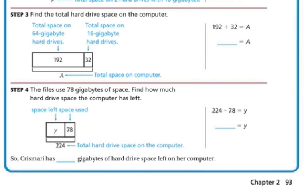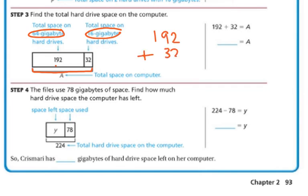Finally, let's find the total hard drive space on the computer. I've got 192 from the 64-gigabyte drives and 32 from the 16-gigabyte drives. To find the total space I add them together: 192 plus 32. 2 plus 2 is 4, 9 plus 3 is 12, regroup my hundreds, 1 plus 1 is 2 hundreds. So the answer is 224.